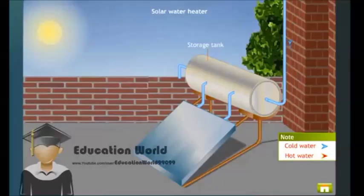The cold water enters the storage tank from the bottom and flows into the copper tubes. The infrared radiations from the sun get trapped inside the box.